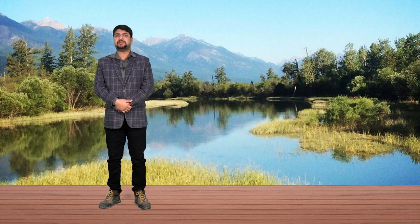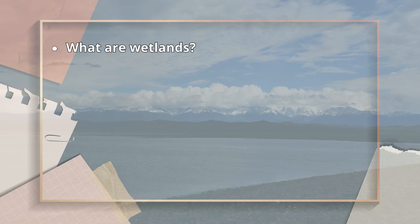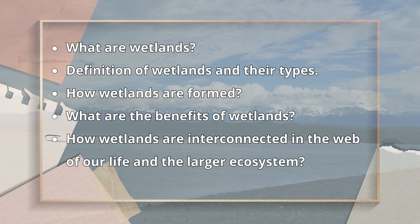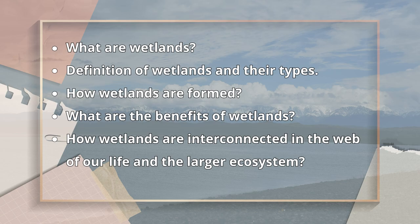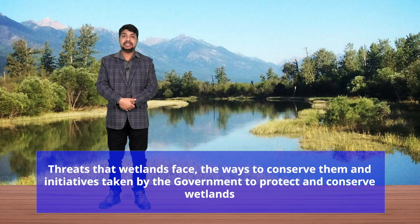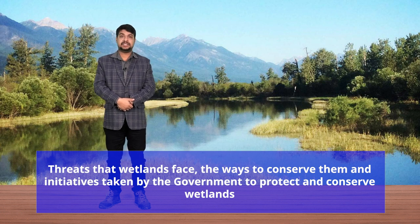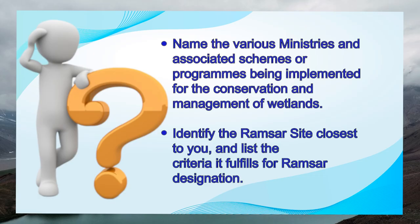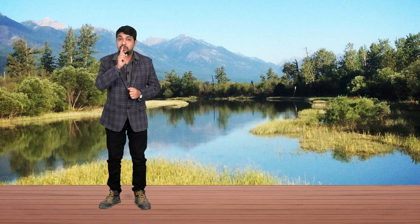You have learnt about the various aspects of wetlands, including what are wetlands, their definition, types, how wetlands are formed, what are the benefits of wetlands, and how wetlands are interconnected into the larger web of life and the larger ecosystem. You also learnt about the threats that wetlands face and the ways to conserve them and initiatives taken by the Government of India to protect and conserve wetlands. Follow-up exercises include: name the various ministries and associated schemes or programs being implemented for the conservation and management of wetlands. Identify the Ramsar site closest to you and list the criteria that it fulfills for Ramsar designation.